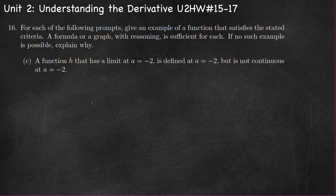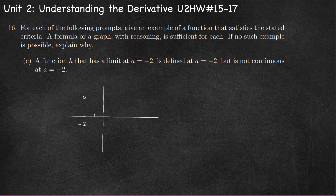Part C, we want a function h that has a limit at a equals negative two, is defined at a equals negative two, but is not continuous at a equals negative two. If it has a limit but it's not continuous there, that tells us it's a removable discontinuity. So at negative two, we're going to draw a graph that has a removable discontinuity — a hole in the graph — with another point at that x value.